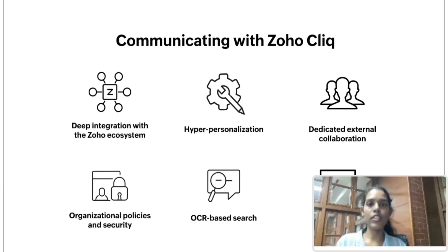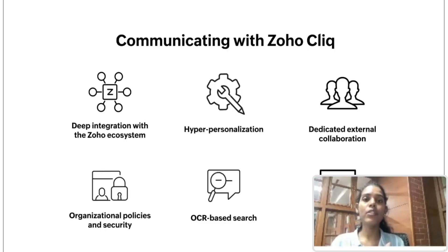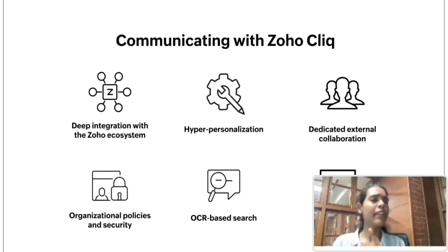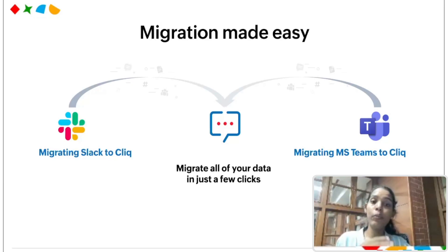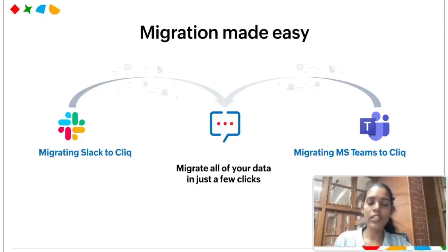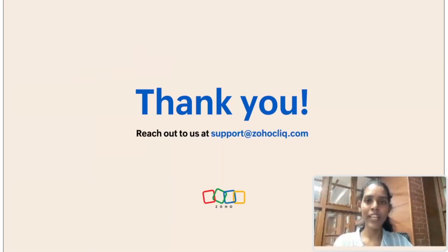ZohoCliq also offers OCR-based search, so you can locate files easily — search is a very important part of any communication tool. Finally, ZohoCliq is available across different devices: not just desktop and phone, but also wearable devices, CarPlay, and Android TV. So if you are using Zoho CRM Plus or any other Zoho app and looking for a communication tool, try ZohoCliq. If you are currently using Slack or MS Teams, you can easily make the switch — we support one-click migration. Thank you so much for joining this session. If you have any queries, please reach out to us at support@ZohoCliq.com.